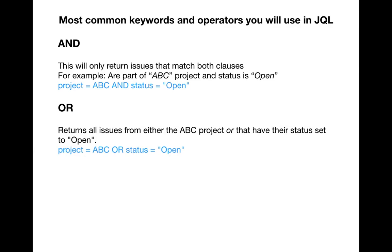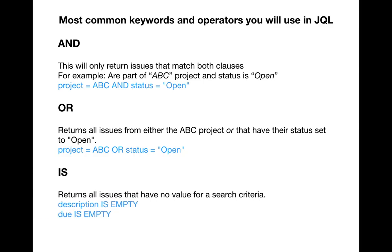The second keyword is OR. OR returns all issues from either the first search query or the second search query — whichever criteria is met. So if you write project is ABC OR status is open, it will list all the issues in project ABC and all the open issues from all other projects, so it's a broader search.